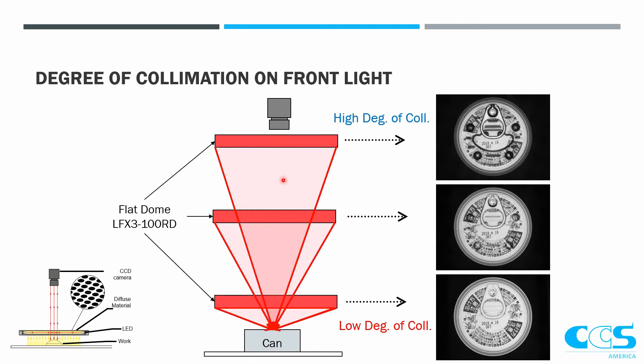Collimation is also applicable in front lighting. When we talked about shadowless lights and dome lights in the first webinar series, we always had a very low working distance and very low degree of collimation, so we were able to remove all of those height changes and 3D features to get one flat image. But as we increase our working distance, we're changing the degree of collimation, making that angle a lot smaller, and now we're able to actually see those 3D height changes and make them very prominent in our images.